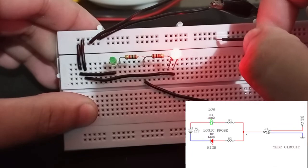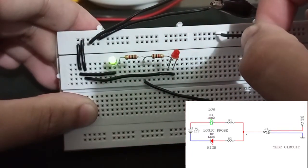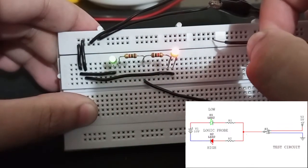Now that we know that the circuit is correct, time to make the casing and solder the components.